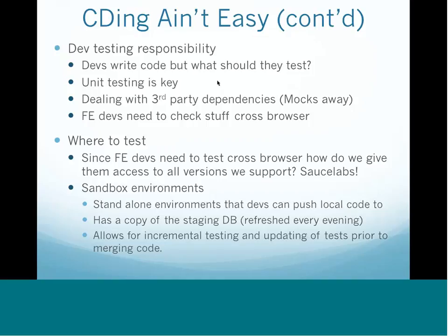Another thing we implemented was sandbox environments. We had staging, production, and devs had local environments — but local was difficult for others to look at. So we decided to create sandbox environments, which are basically mirror-image environments of staging. They allow us to deploy local versions of code and branches to any of those environments, giving devs access to real databases against their code, and allowing QA to look at new features and build new tests against them in isolation before they're ever merged into the codebase.